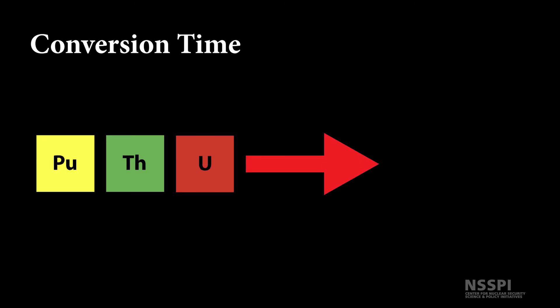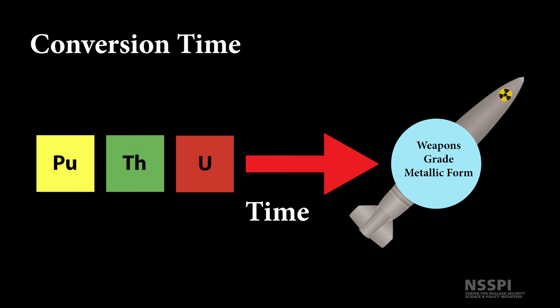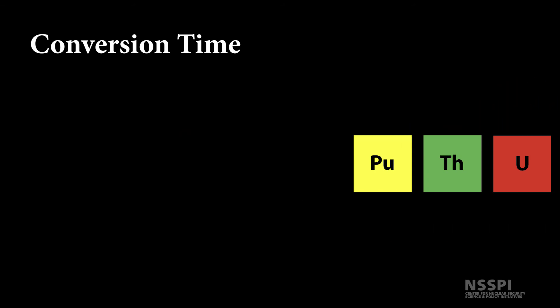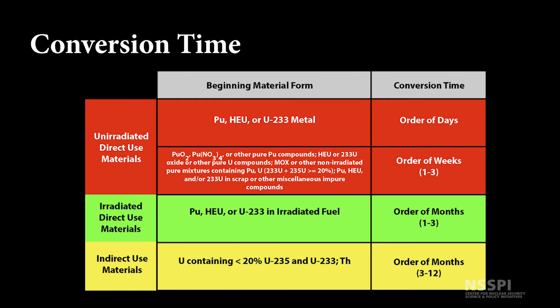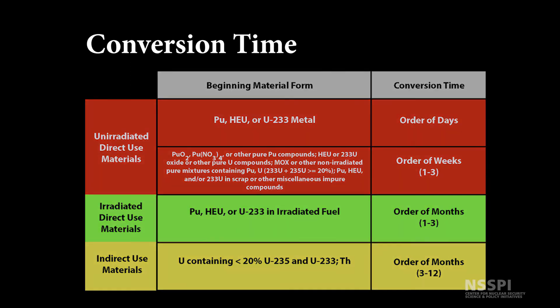Conversion time refers to the time required to convert different forms of nuclear material to the metallic components of a nuclear explosive device. It does not include the time required to transport diverted material to the conversion facility or to assemble the device. Diversion activity is assumed to be part of a planned sequence of actions chosen to give a high probability of success in manufacturing one or more nuclear explosive devices, with minimal risk of discovery until at least one such device is manufactured.